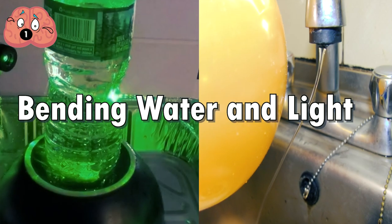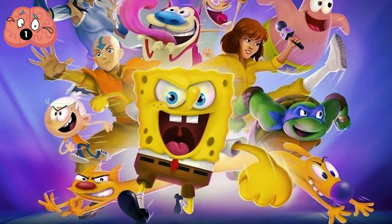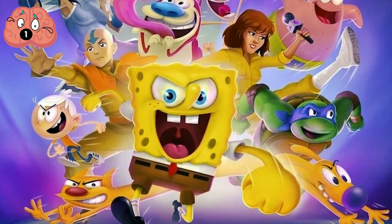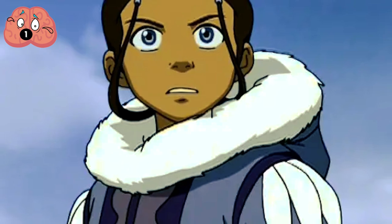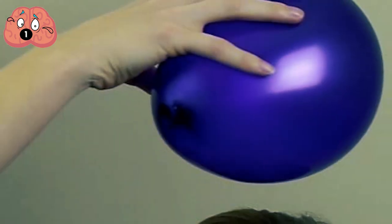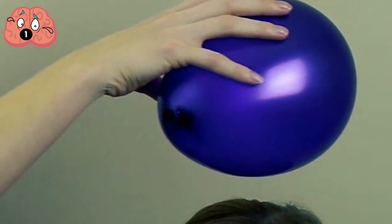Number 1. Bending Water and Light. You're all familiar with the Nickelodeon animated series Avatar, The Last Airbender, right? Now, what if I told you that you're a descendant of Katara? You're a waterbender. You can prove that in two ways. First, let's start by bending a gentle stream of water. All you need to do is get a dry balloon and rub it against your hair at least 10 times, and then slowly bring it close to a thin stream of water coming from the faucet. You'll notice that it bends towards the balloon. How is it possible?